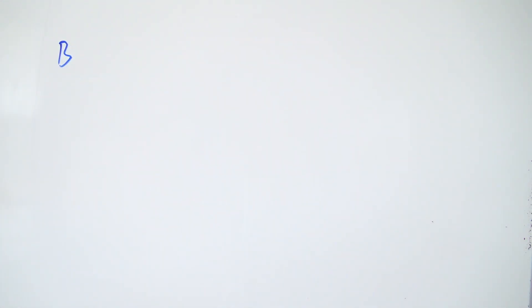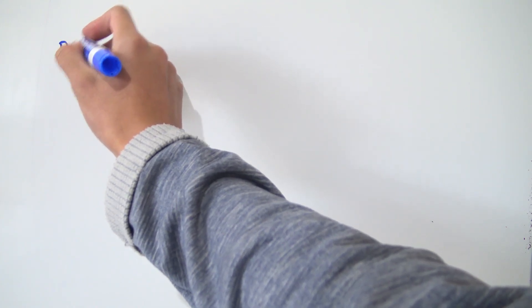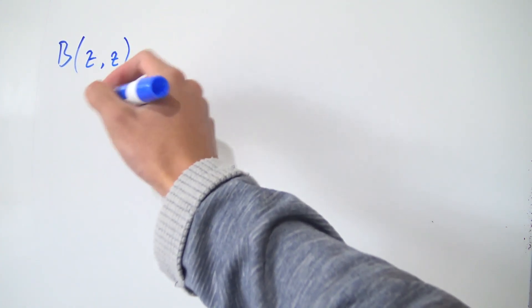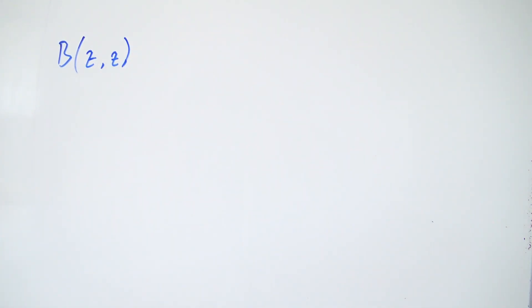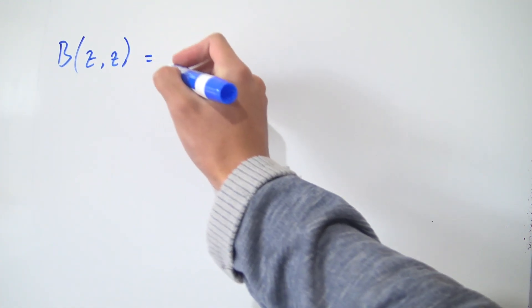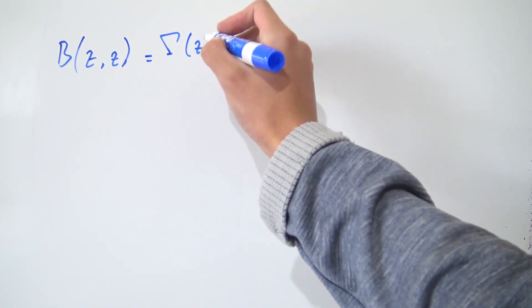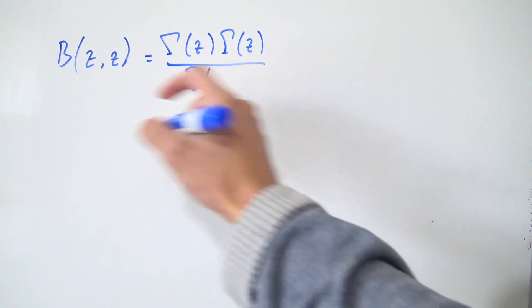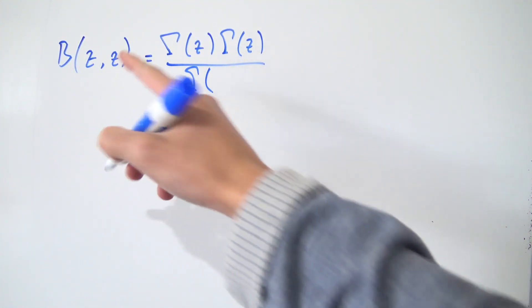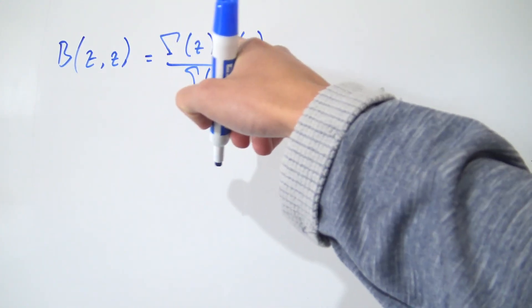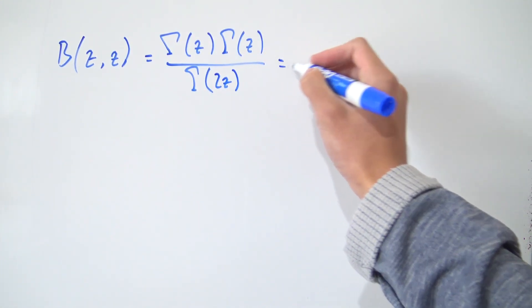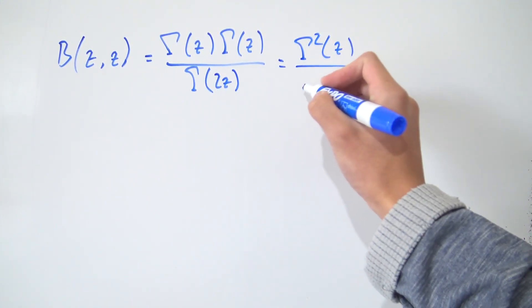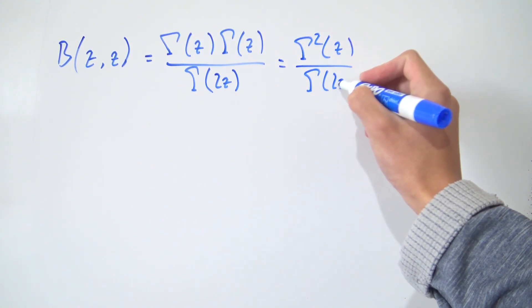I've derived an integral representation for this beta function in a previous video. In this video we're going to be looking at a specific case: beta of z and z, where both inputs are the same. We can write this in terms of gamma functions because beta of two variables is gamma of the first variable times gamma of the second variable divided by gamma of their sum. In this case that's gamma squared of z over gamma of 2z.